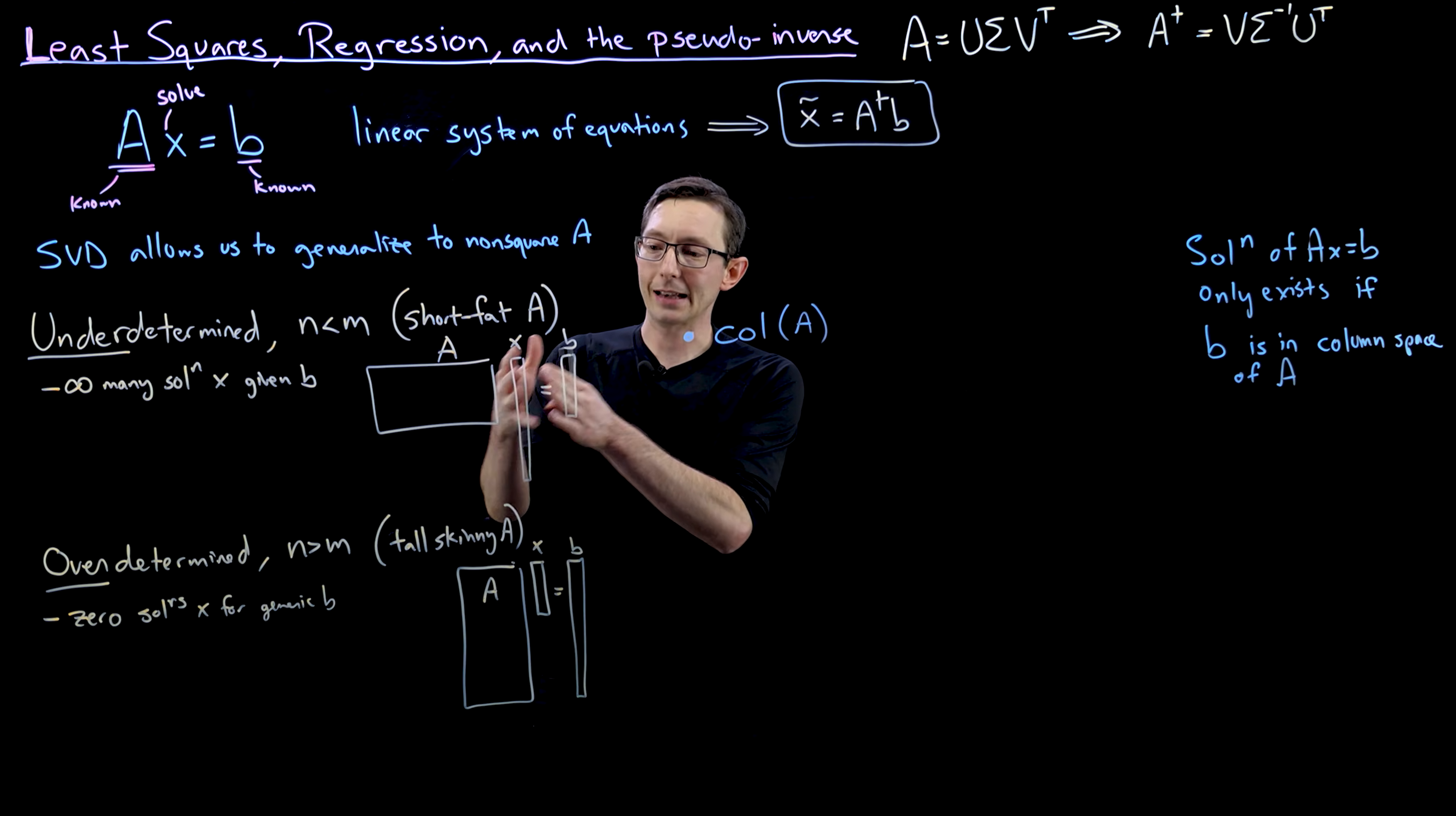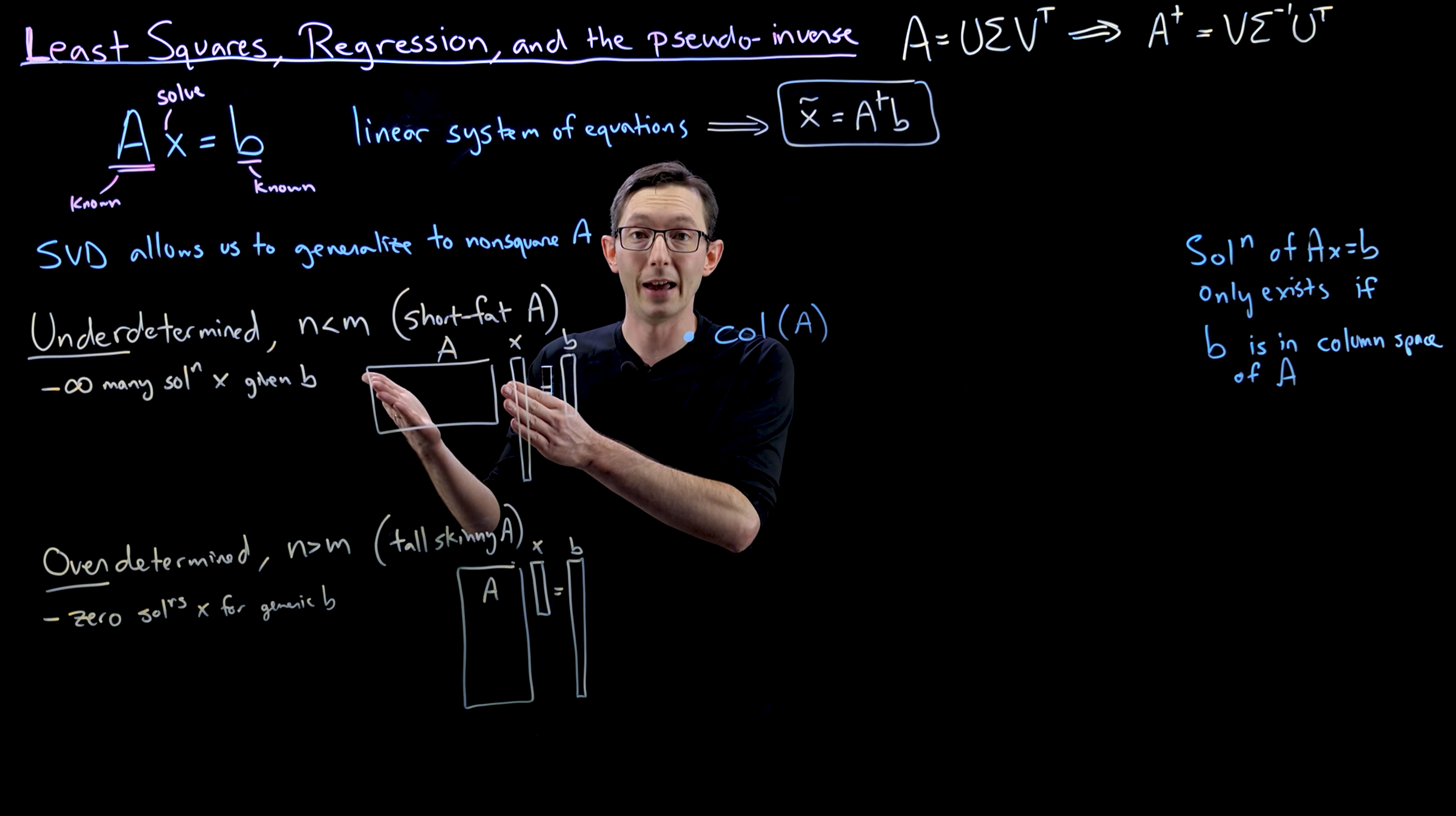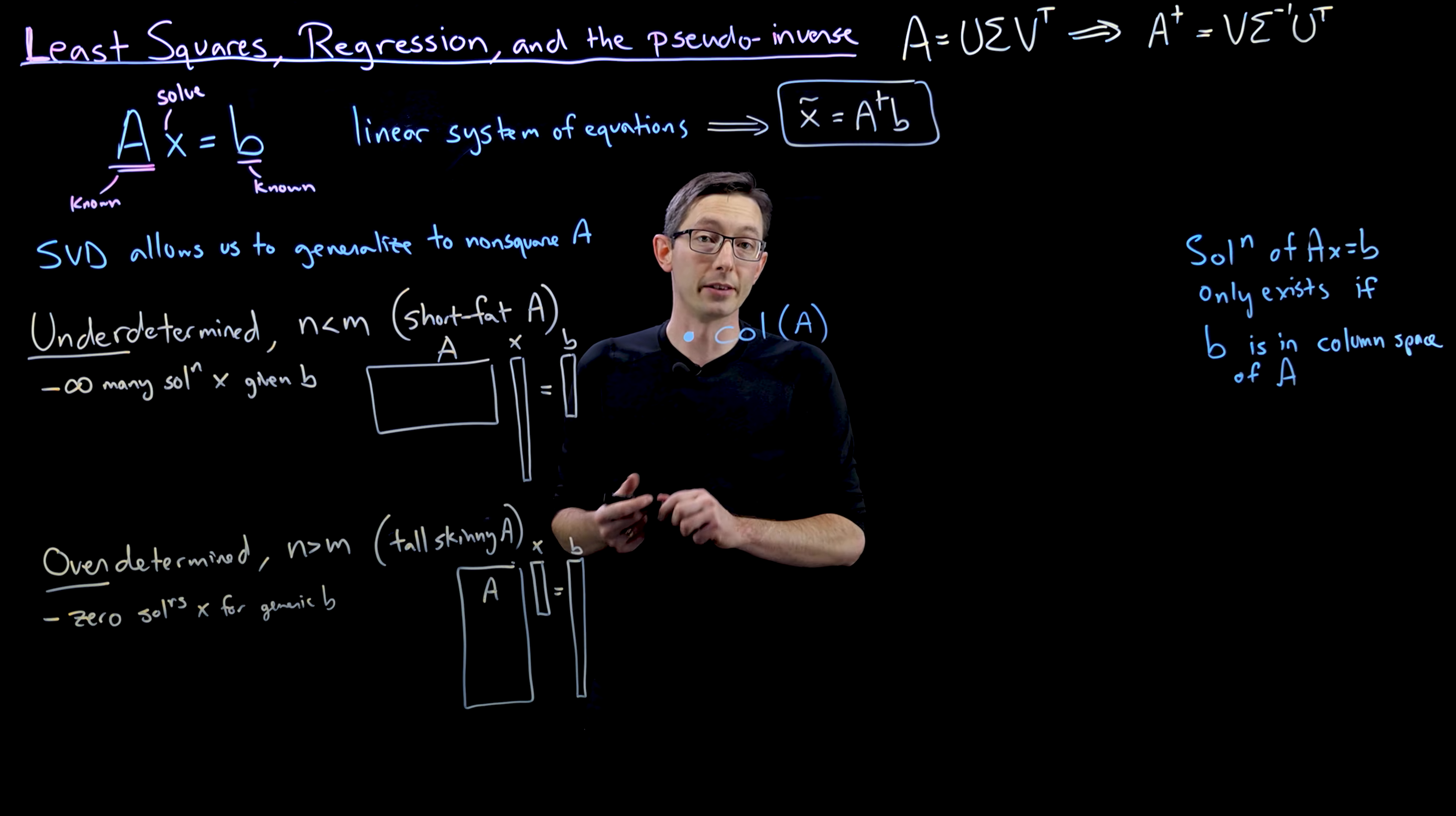So if I have AX equals B, then what we're trying to do is find some vector X so that if I added up the columns of A in that linear combination, it would equal B. Now clearly that's only possible if B is in the span of the column vectors of A. In this case of the underdetermined system, it's highly likely that B will be in the span of the column space of A. But I could certainly cook up a terrible example, a counter example of a very degenerate A matrix where it's not true that B is in the column space of A.